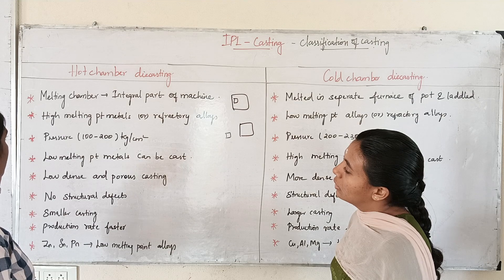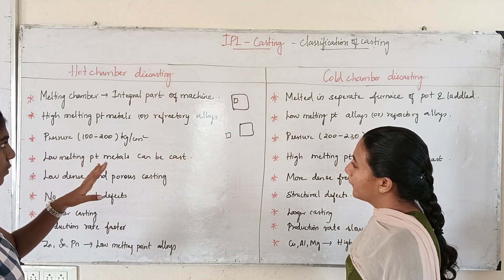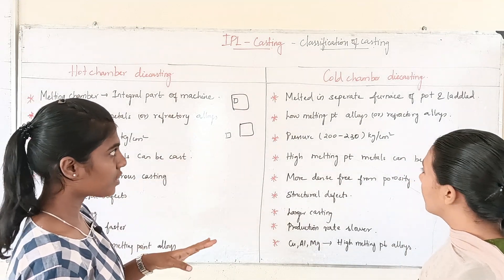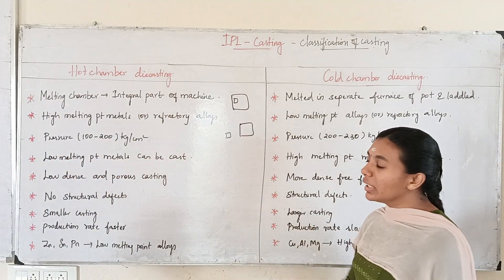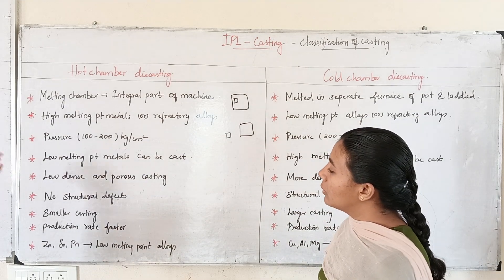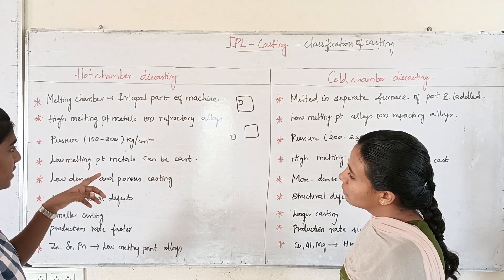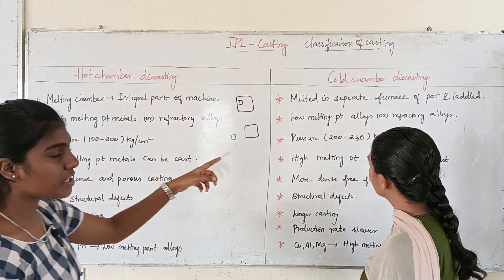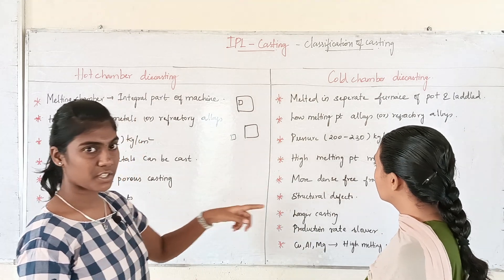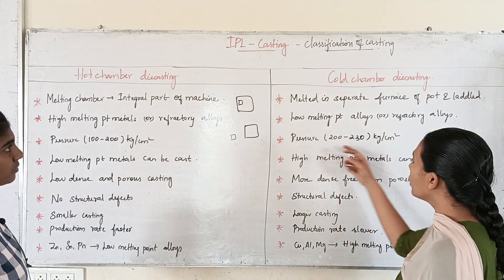Hot chamber die casting is used for low melting point alloys. Cold chamber die casting is used for high melting point alloys. The pressure for hot chamber is 100 to 200 kg per cm², and for cold chamber it is 200 to 300 kg per cm².